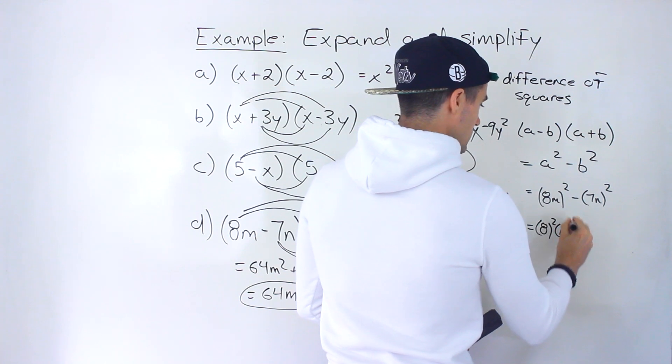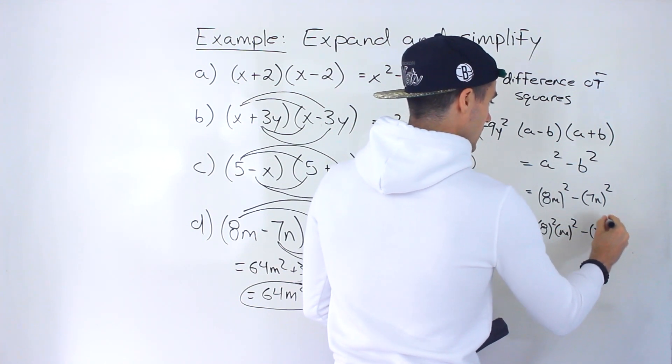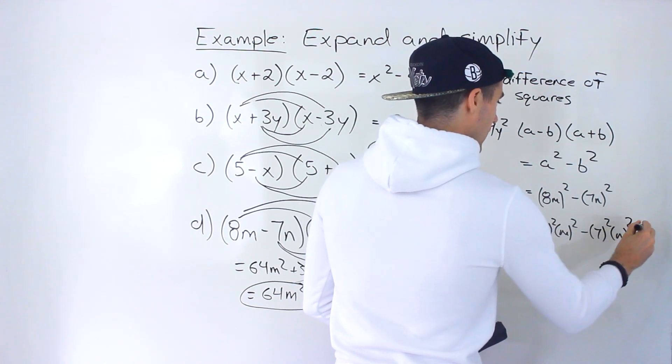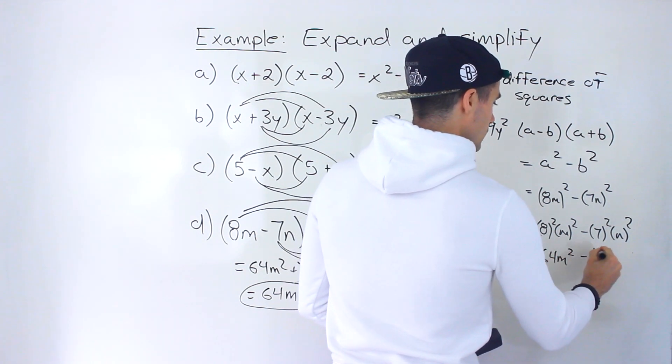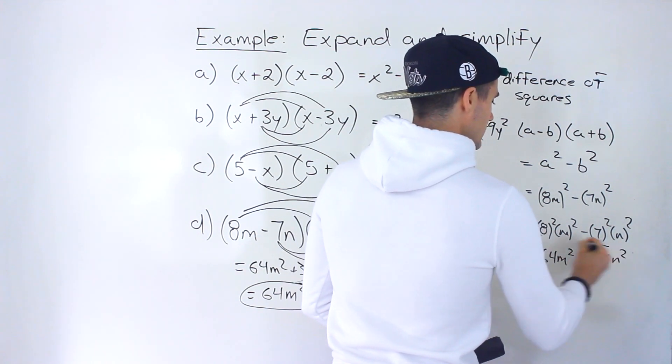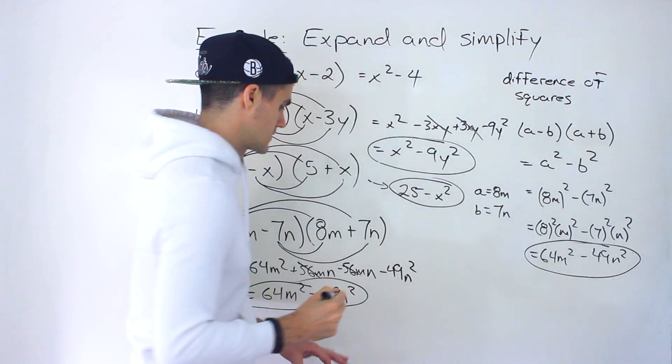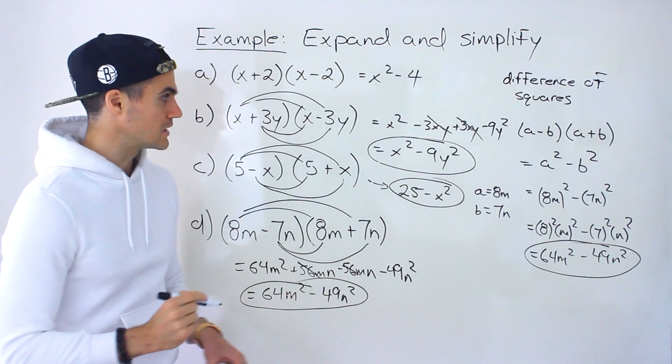This would be 8 goes to the power 2, m goes to the power 2, 7 goes to the power 2, n goes to the power 2. So we'd end up with 64m squared minus 49n squared like that. Same thing that we got when we did it manually.